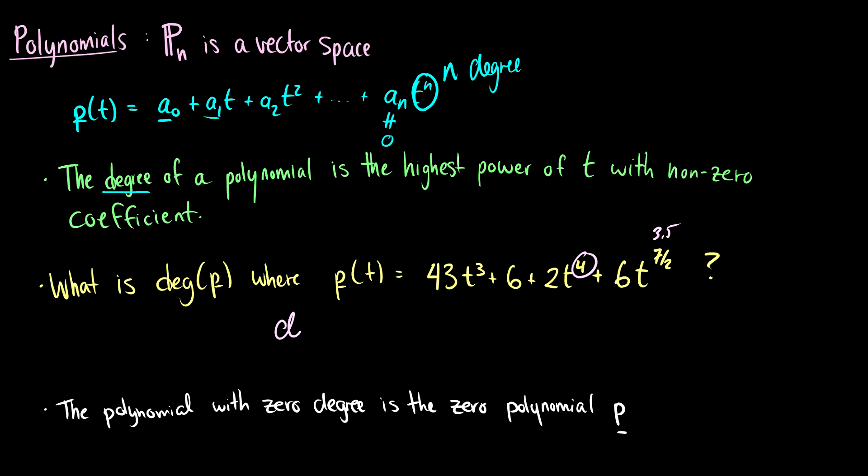So the degree of the vector p, or the polynomial p, is going to be 4. The polynomial with the zero degree is the zero polynomial. So this is usually just again written as a zero.